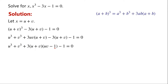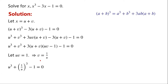If uv equals 1, then this term equals 0. We let uv equal 1, so v equals 1 over u. By substituting v equals 1 over u into the equation, we can now write u³ plus 1 over u cubed minus 1 equals 0.